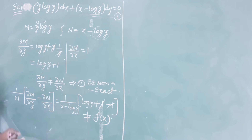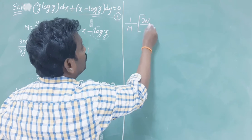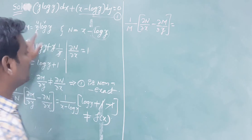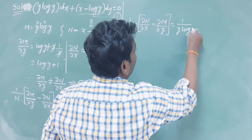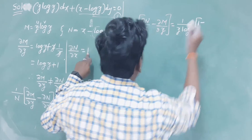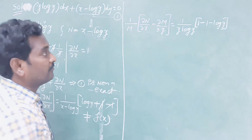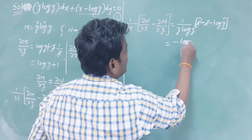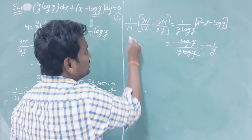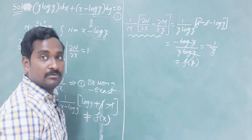Now check (1/M)·(∂N/∂x - ∂M/∂y). Here 1/M = 1/(y·log y). We compute ∂N/∂x - ∂M/∂y = 1 - (1 + log y) = -log(y). So the expression becomes -log(y)/(y·log y). The log(y) terms cancel, giving -1/y. Since the result is a function of y only, we can use the type 4 integrating factor.